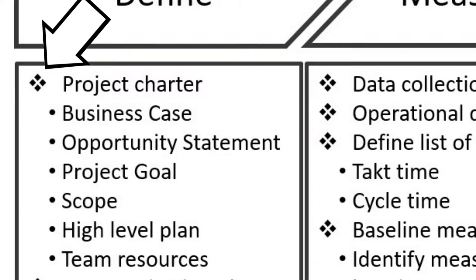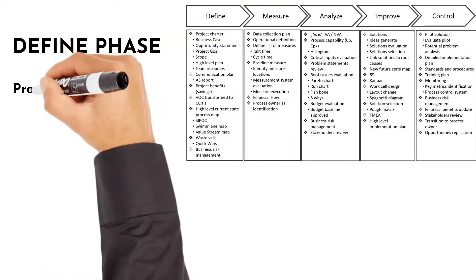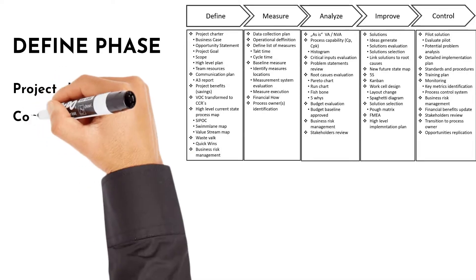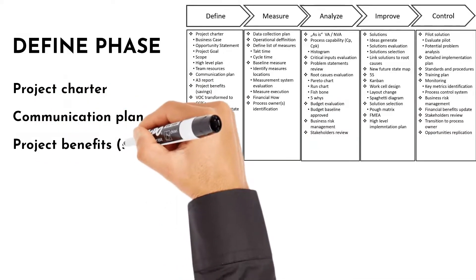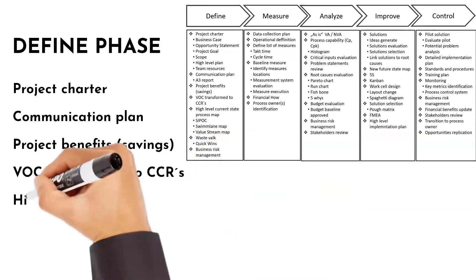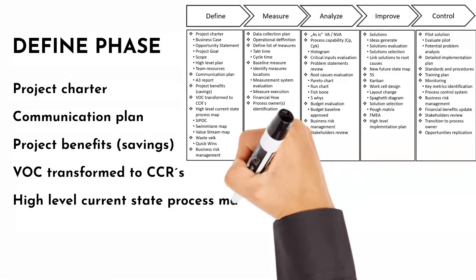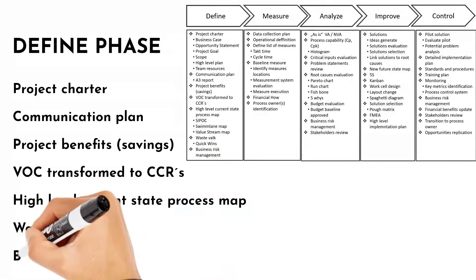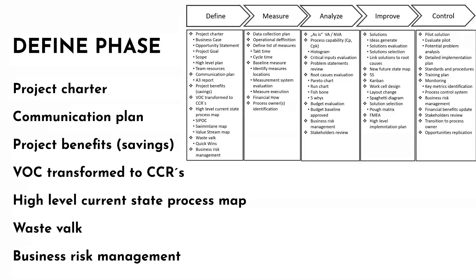For example, in the Define phase, the project charter is a main tool and its subtopics are: business case, opportunity statement, project goal, scope, high level plan and team resources. The other main tools in the Define phase are: communication plan, project benefits, voice of customer transformed to critical customer requirements, high level current state process map, waste walk and business risk management.